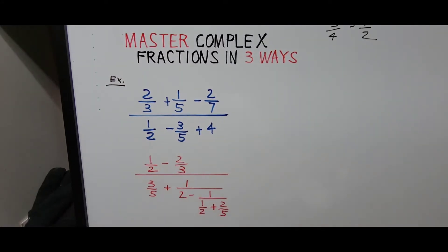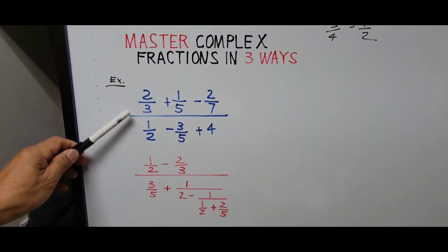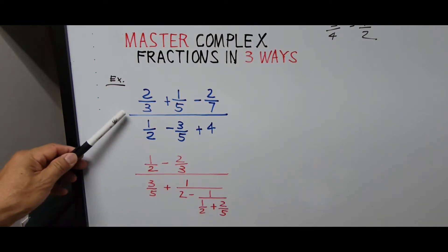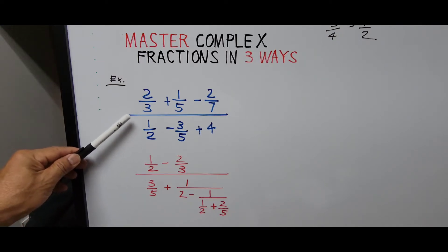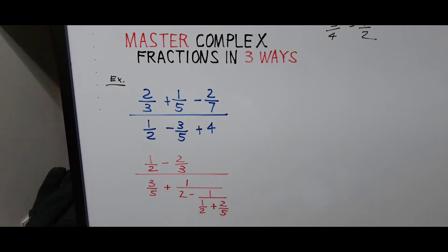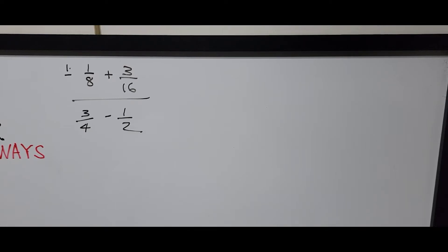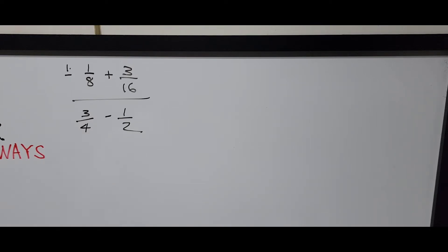We have two examples here — one in red ink and the other in blue ink. The red ink has the highest difficulty level, and the blue ink is next in difficulty. Before we solve those difficult problems, we're going to go gradually from the easier ones to the hardest. So we have here complex fraction number one. As mentioned, there are three ways to master complex fractions, and this first example should be the easiest one to solve.